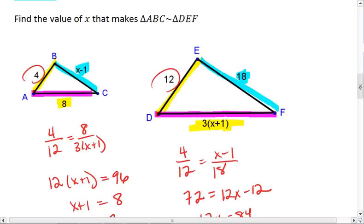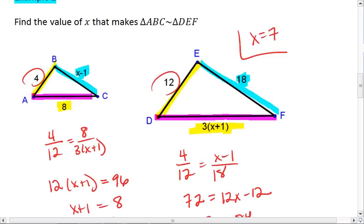So it works out that X equals 7 is my final answer. Because if I plug 7 in for X in both situations, the X plus 1 and the 3X plus 1, I will end up with proportional sides, which makes the triangle similar.